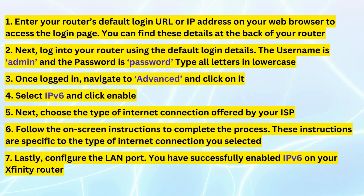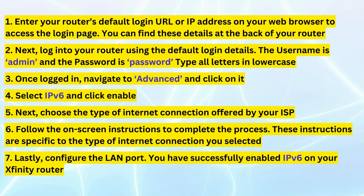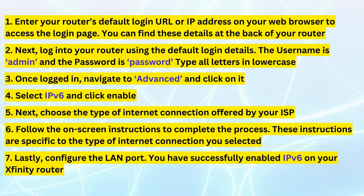Once logged in, navigate to Advanced and click on it. Select IPv6 and click Enable. Choose the type of internet connection offered by your ISP, then follow the on-screen instructions to complete the process. These instructions are specific to the type of internet connection you selected.